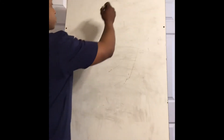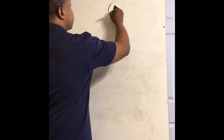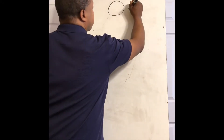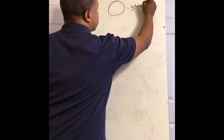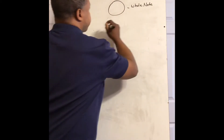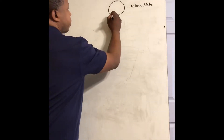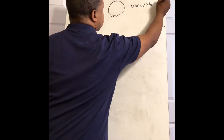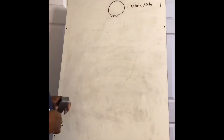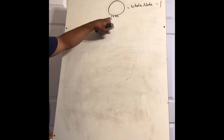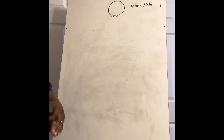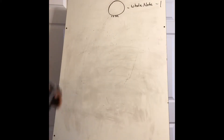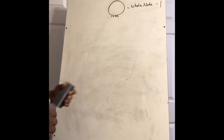First thing we're going to talk about is the whole note, and the whole note looks like this right here. That equals four counts — you can say it equals four beats. The whole note equals four counts or four beats, so it'll be like one, two, three, four. One, two, three, four. So it's continuous.